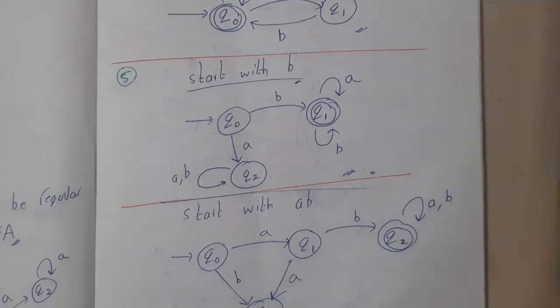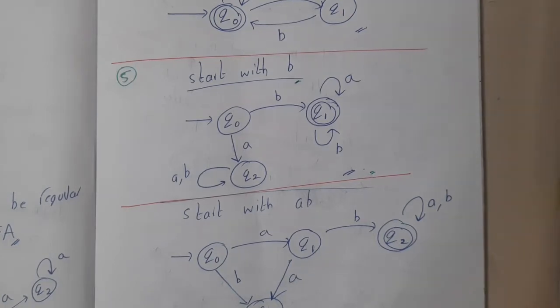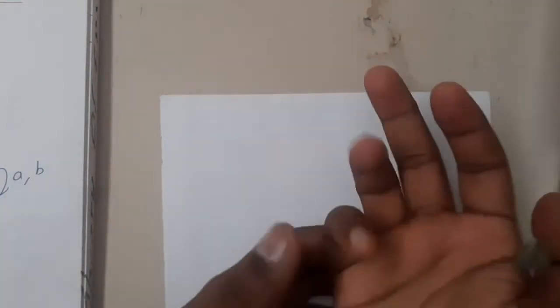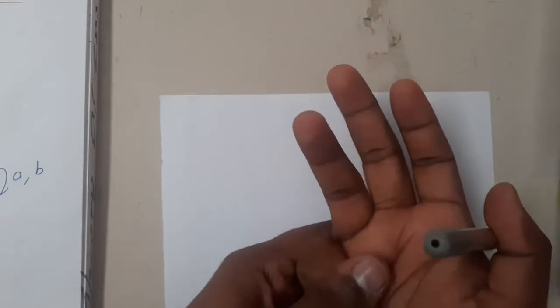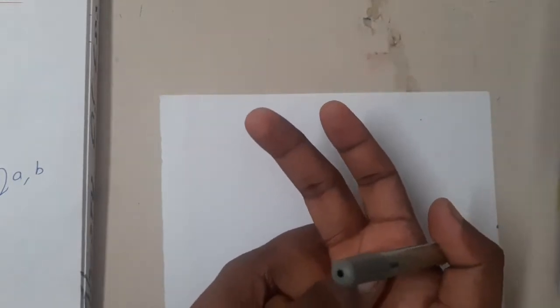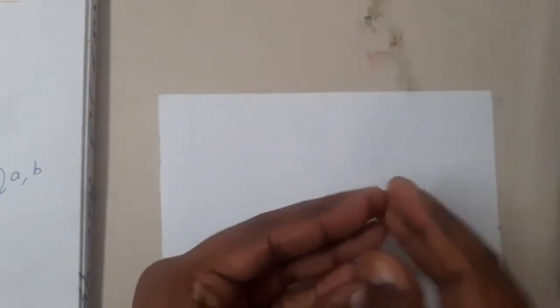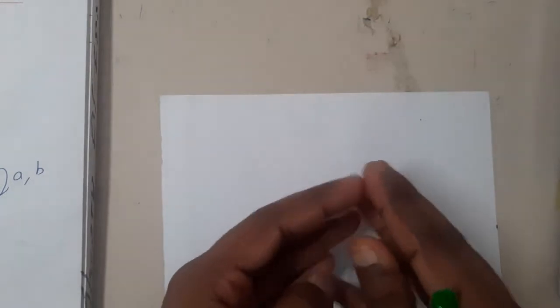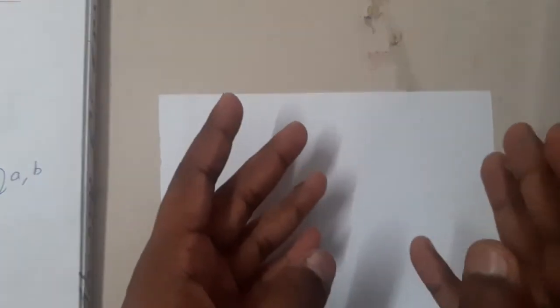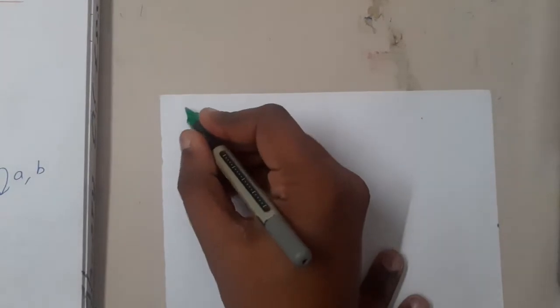Hello guys, we are back with our next lecture. In this lecture, let us start our diagrams practice with respect to finite automata - deterministic finite automata. I will be discussing three concepts: the first will be with respect to start symbols, the second with respect to ending symbols, and the third with respect to substrings. We are discussing these basic things because whenever you want to draw an automata for a big requirement, you should first know how to start.